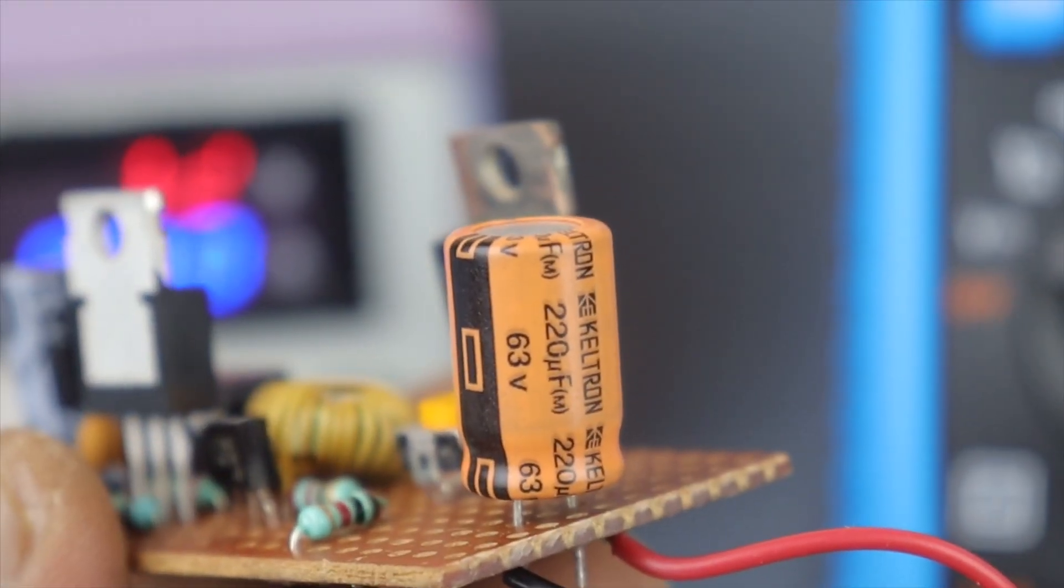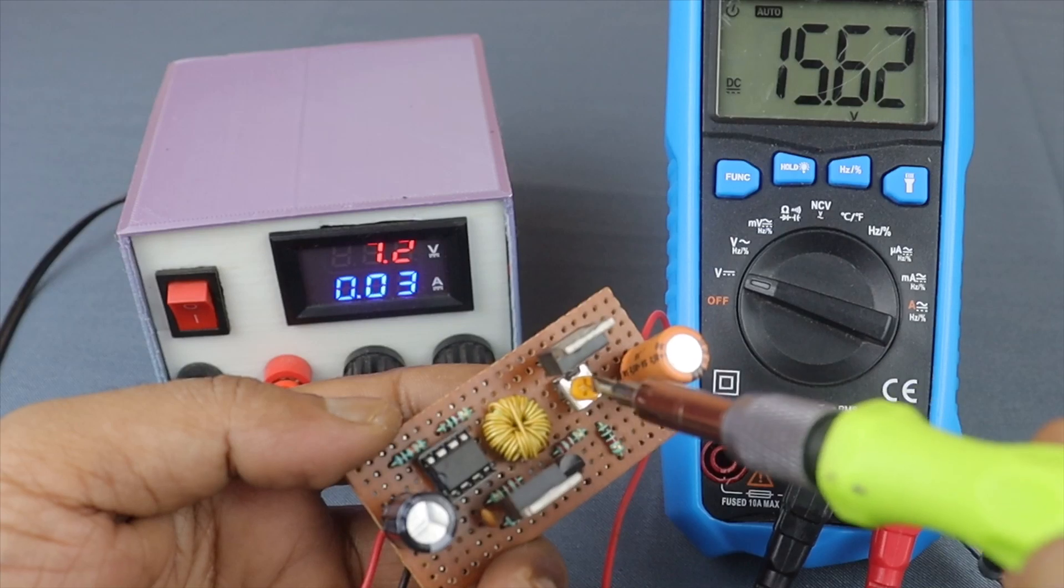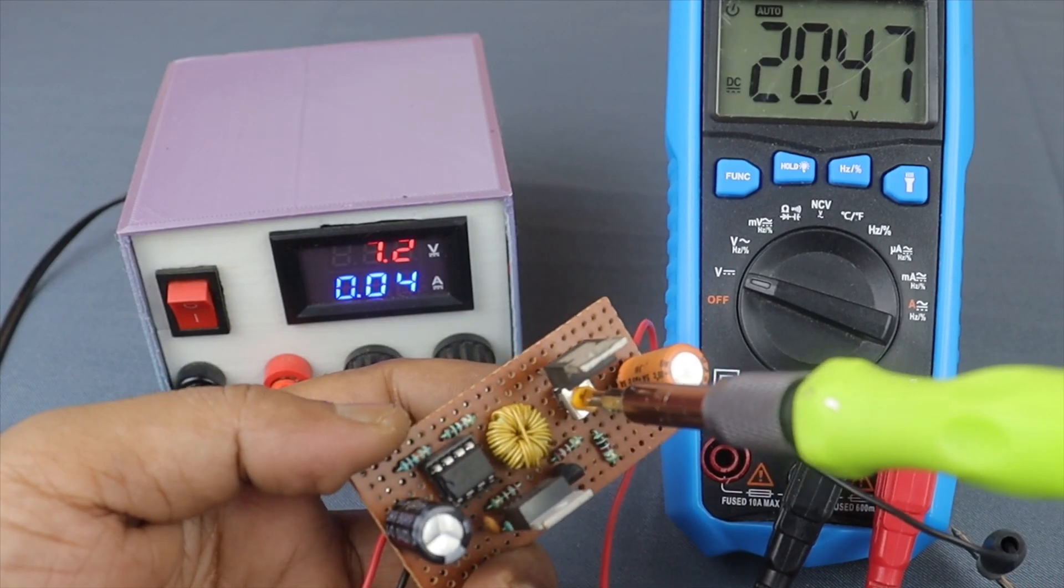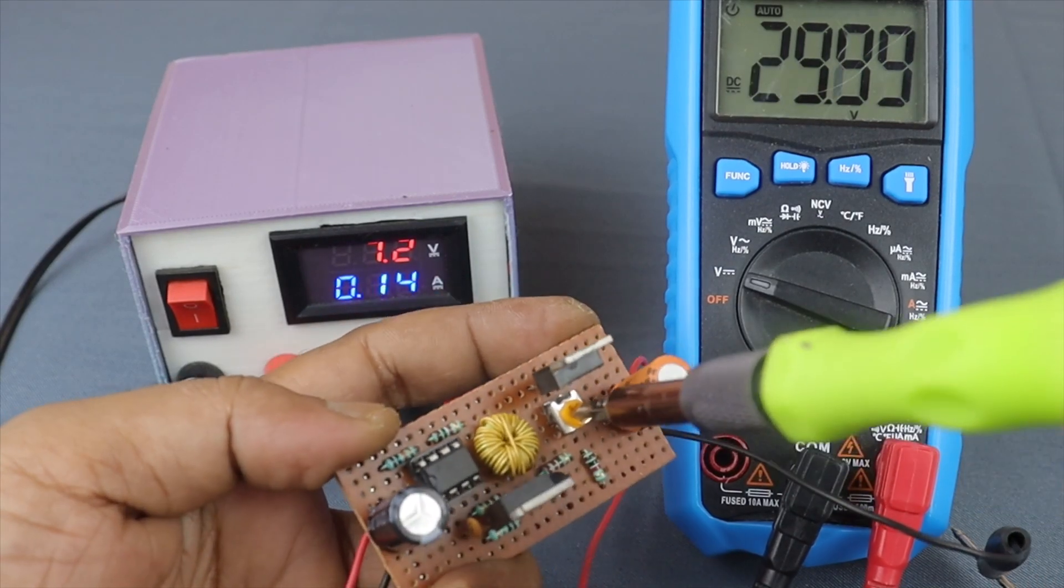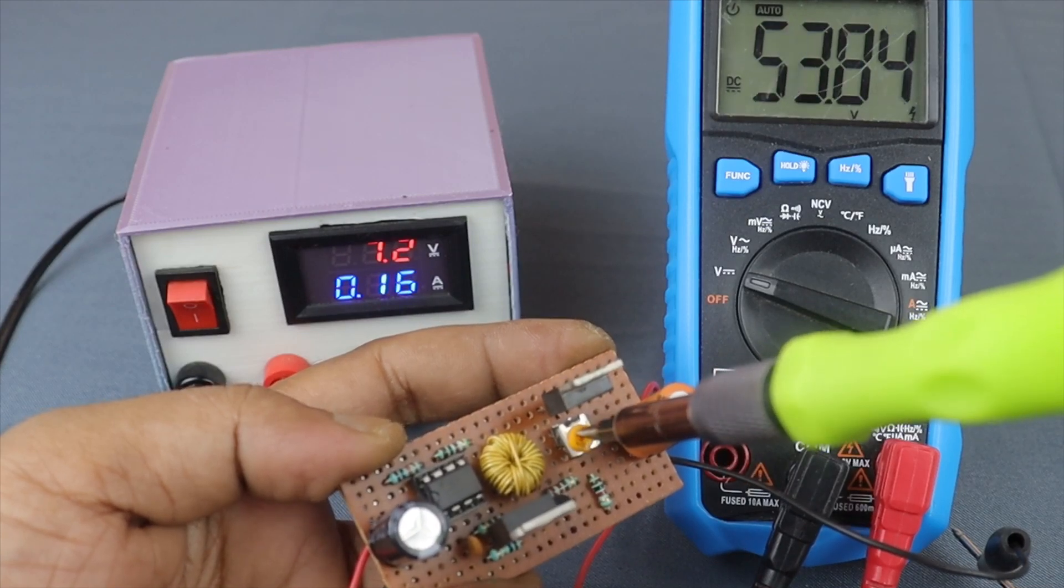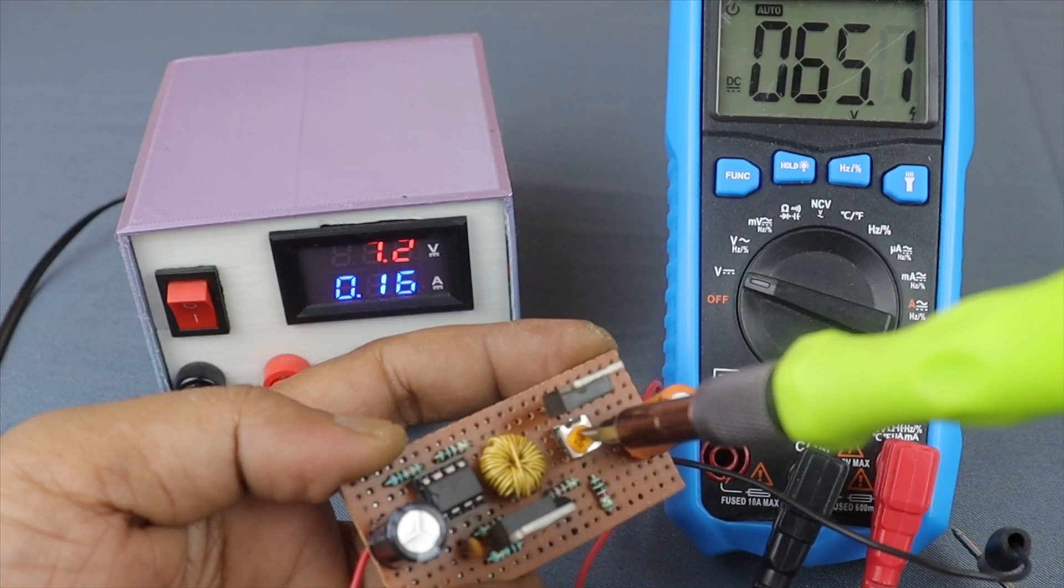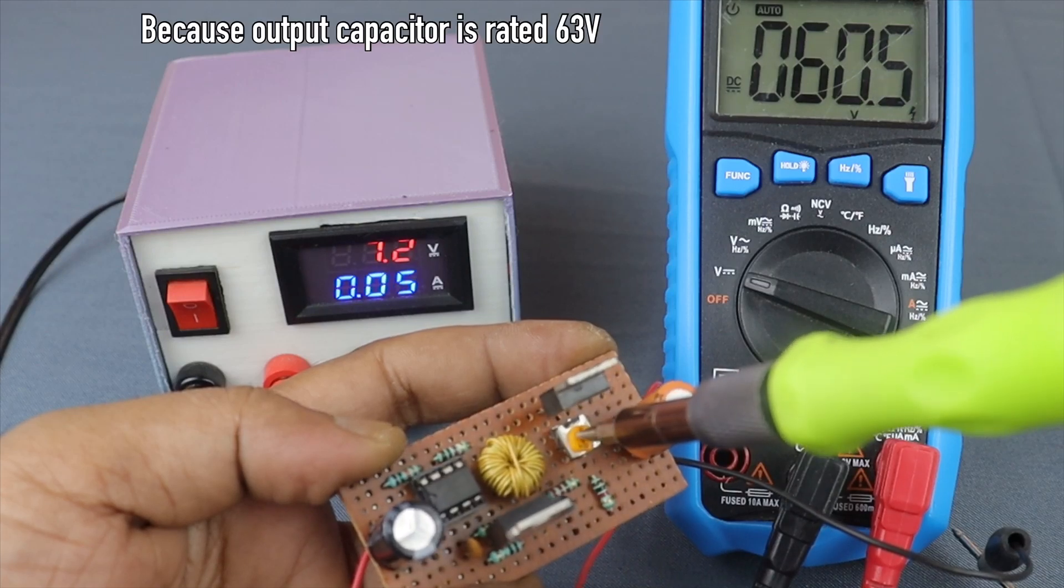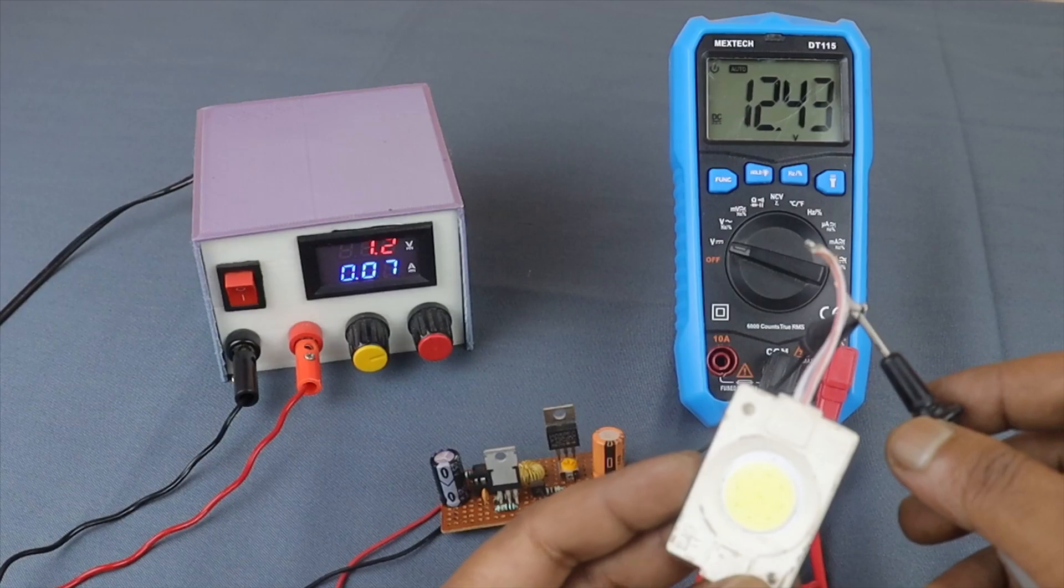Now I've installed a 63V filter capacitor. Let's increase the voltage. 65V, but we shouldn't go over 63V. Connecting a 12V high power LED.